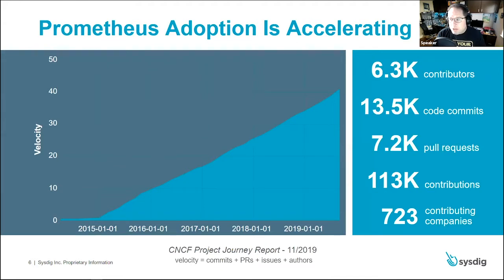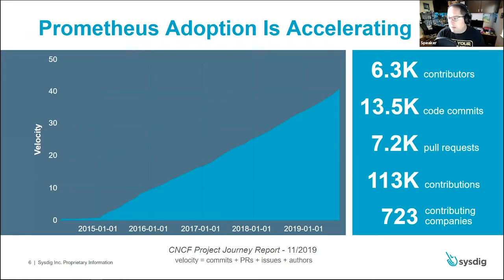These stats are taken from a CNCF report published almost a year ago, and the trends have continued to go up. The CNCF measures project velocity by combining the number of commits, pull requests, issues, and authors to judge the health of a project. Not only is Prometheus the second most popular project, but it's also growing in both popularity and number of contributions across the various Prometheus projects on GitHub.